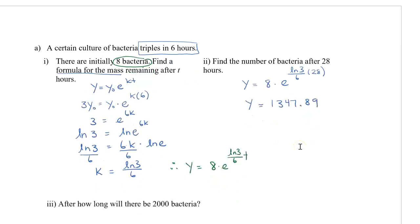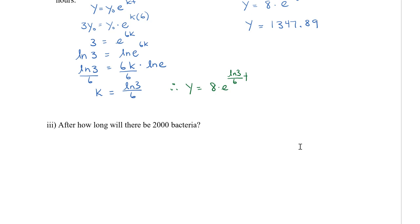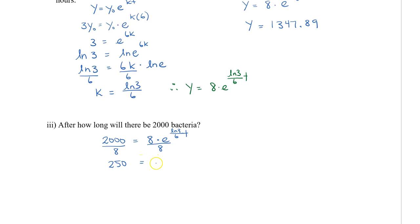Let's take a look at another type of problem: after how long will there be 2,000 bacteria? This time we are trying to find our time. We're going to plug in 2,000 for our final amount, equals 8 times e to the power of ln 3 divided by 6 times t. We're trying to isolate t. Rather than taking the log of both sides immediately — which would require the product rule — I'll divide both sides by 8 first to make it easier.